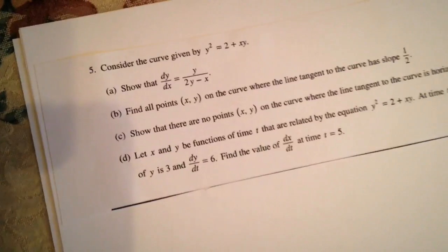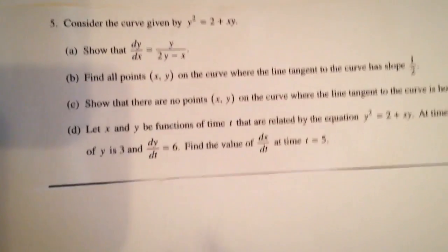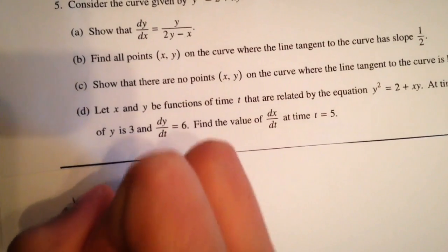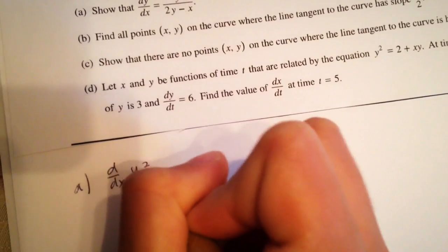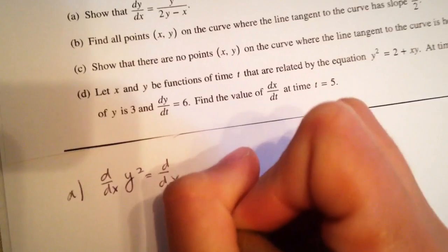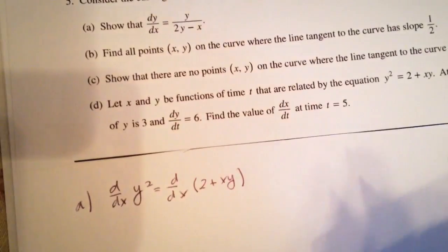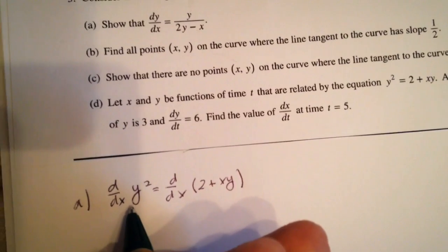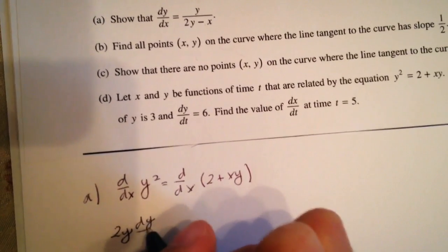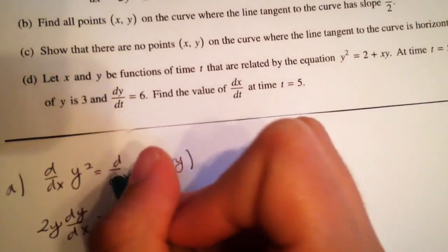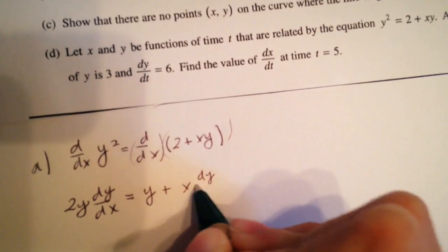Using implicit differentiation, we gather all the dy/dx terms and then solve. We take the derivative of each side. We simplify using the chain rule, and then apply the product rule, which gives us y plus x dy/dx.